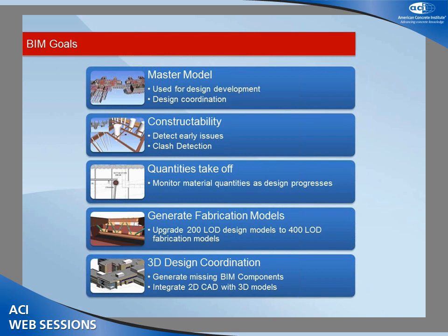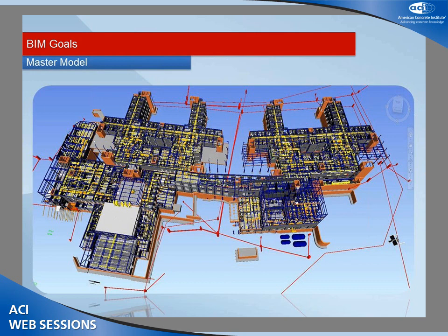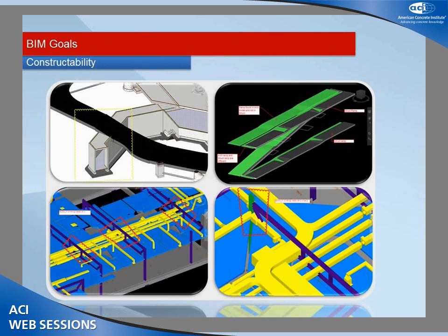A few examples of what we targeted using 3D systems on the project. We maintained a master model — similar to how you'd maintain a master set of contract documents — and did constructability analysis using clash detection to make sure all systems would fit together. We used the models for quantity takeoff to quickly evaluate volumes of concrete and square footage of curtain wall. We also brought in fabrication models and ensured they worked with all other fabrication models. The master model combined content from many different companies. Ellis Don modeled placeholders for things we didn't get from subcontractors — like the peripheral underground drainage systems — filling in the blanks where necessary.